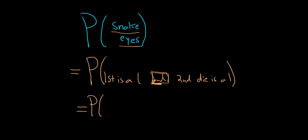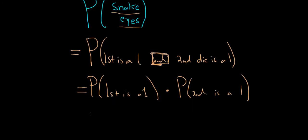So this means the probability the first is a one times the probability the second is a one. We want them both to be ones. Let's work out these probabilities.